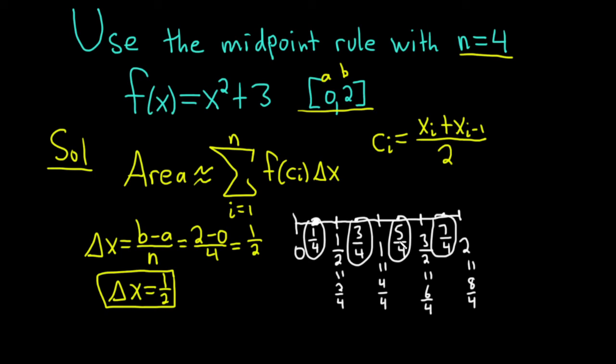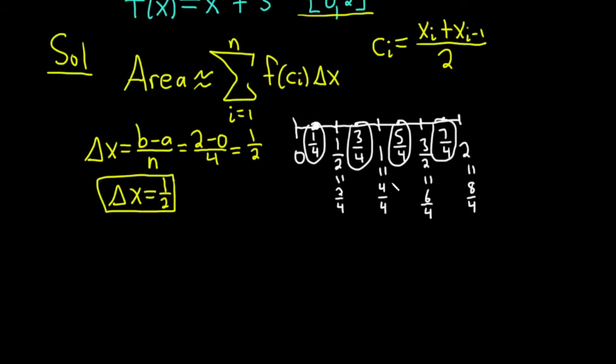Now, it doesn't always work this easily. What you can do is you can actually just add them up and divide. So c sub one is one fourth. c sub two is three fourths. c sub three is five fourths. And c sub four is seven fourths.